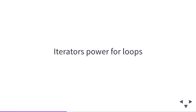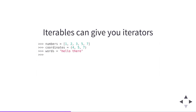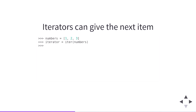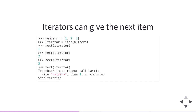We have three iterables here — a list, a tuple, and a string. We can ask each of these for an iterator using Python's built-in iter function. Passing an iterable to the iter function will always give us back an iterator. Once we have an iterator, the only thing we can do with it is get the next item from it. We use Python's built-in next function to do that. If you ask for the next item and there are no more items, you'll get a StopIteration exception.